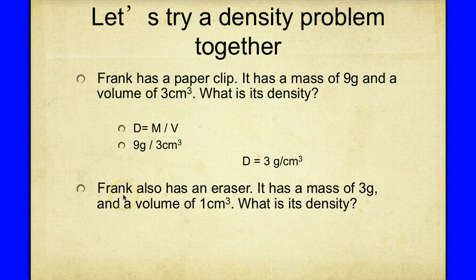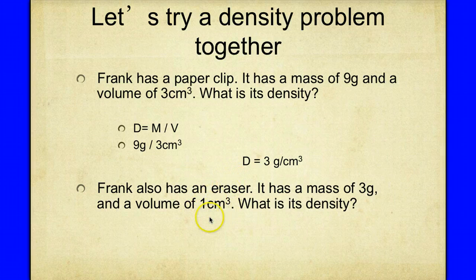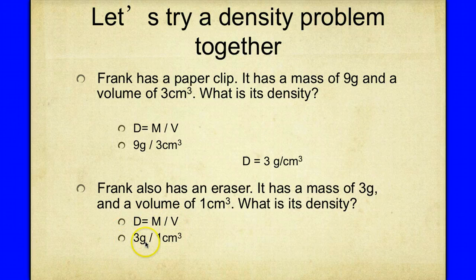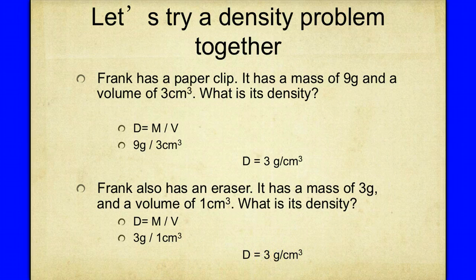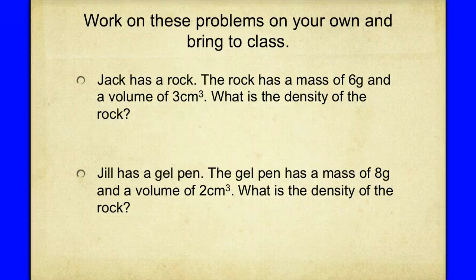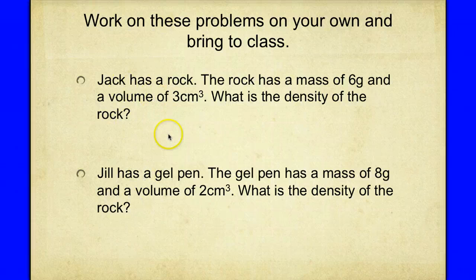Second problem: Frank also has an eraser with a mass of 3 grams and a volume of 1 centimeter cubed. Using the same setup — density equals mass divided by volume — we substitute 3 grams divided by 1 centimeter cubed. Three divided by 1 is 3, so the density is 3 grams per centimeter cubed. Now pause the video and try the practice problems on your own, setting them up exactly the same way.